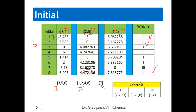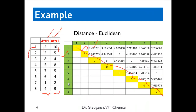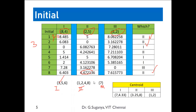Now we have to find the centroids of the clusters. For the centroid of cluster 1, take points 3, 5, and 6. The attribute 1 values of points 3, 5, and 6 are summed and divided by 3, giving approximately 7. For attribute 2, the values of points 3, 5, and 6 are 4, 5, and 4 respectively: 4+4+5=13, and 13 divided by 3 is approximately 4.33. Similarly, all cluster centroids are calculated, and these centroids become the leaders for the next epoch.